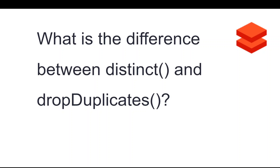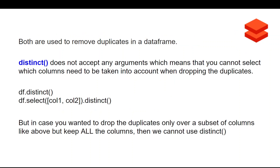This is one of the very important questions asked frequently: what is the difference between distinct and drop_duplicates? If you guys already know the difference, do let me know in the comments after pausing this video. Both distinct and drop_duplicates are actually used to remove duplicates in a data frame. Distinct does not accept any arguments, which means you cannot select which column needs to be taken into account when dropping the duplicates.